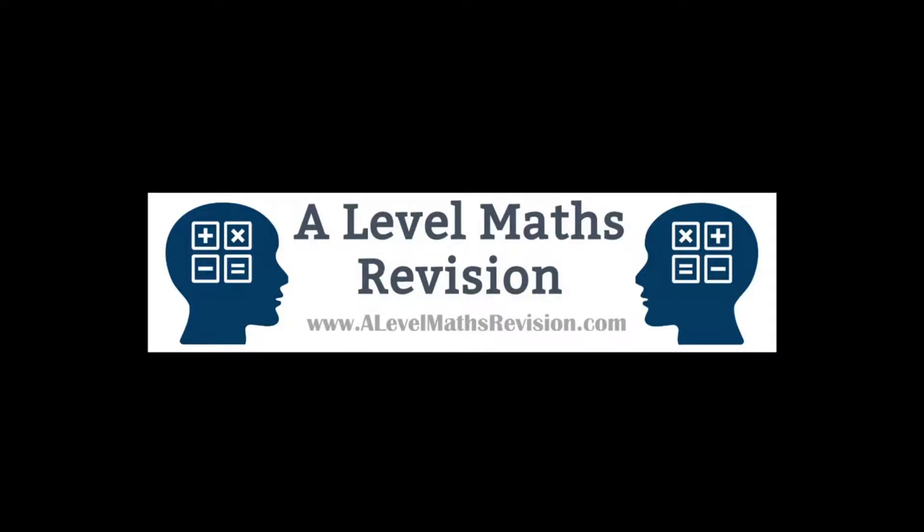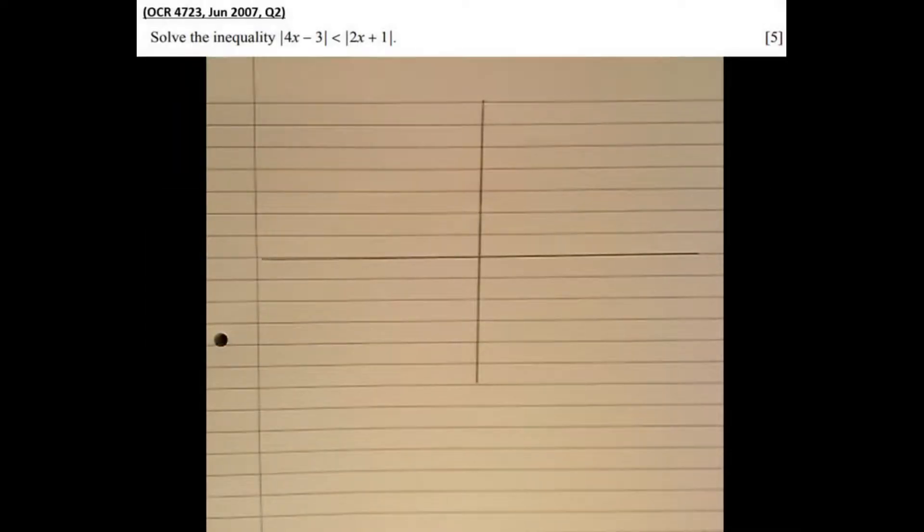In this video we're going to be solving inequalities involving a modulus sign, but we're going to be using a method that involves drawing each of the two sides of the inequality. So if we draw each side of the inequality, we've got y equals modulus of 4x minus 3 and y equals the modulus of 2x plus 1.